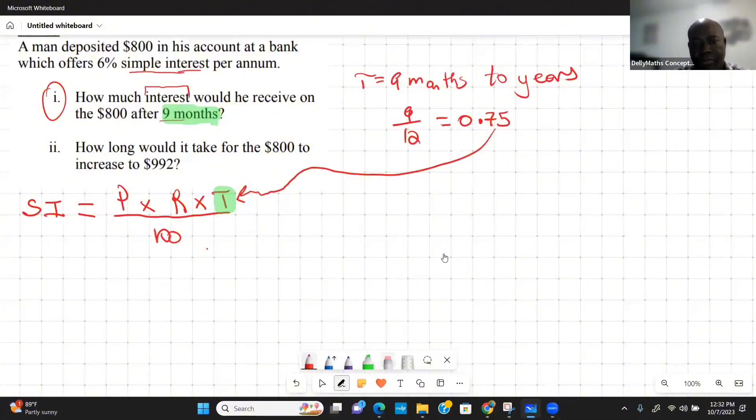The principal, which is the money invested, is $800, times the rate which is the percentage here, times the time which is going to be 0.75 years. We converted the months to years and we divide this by 100.